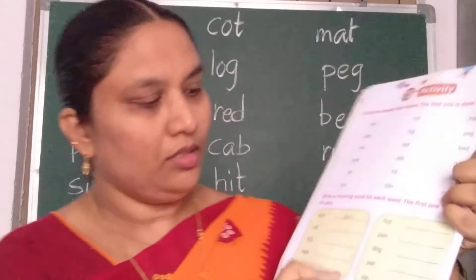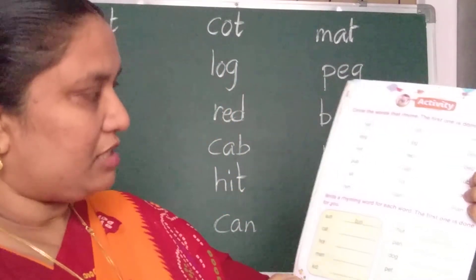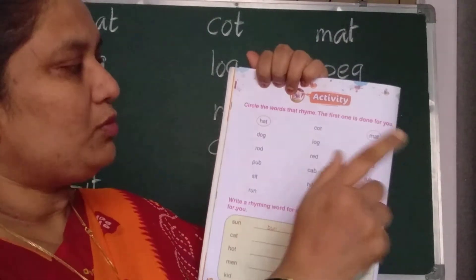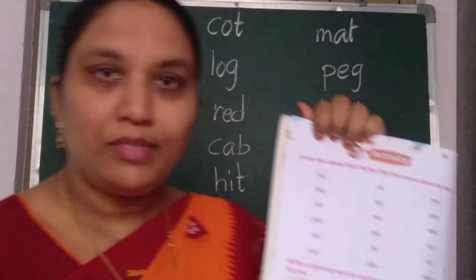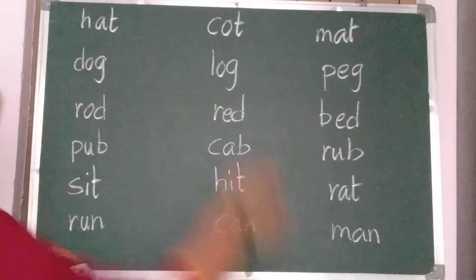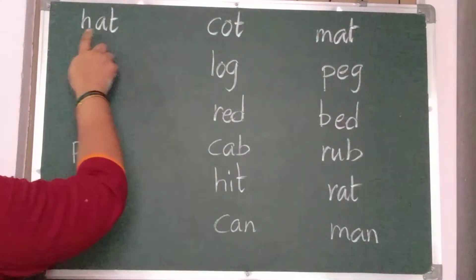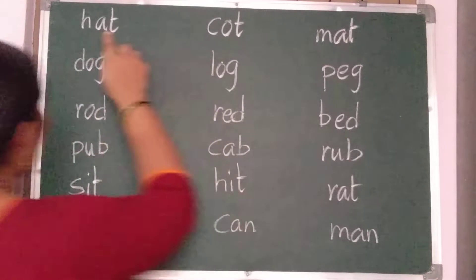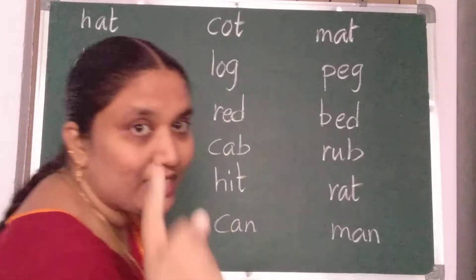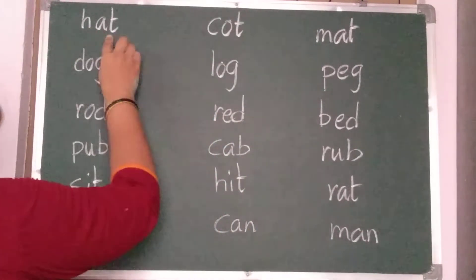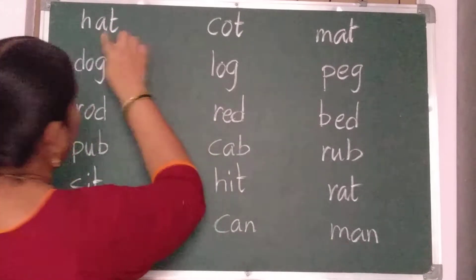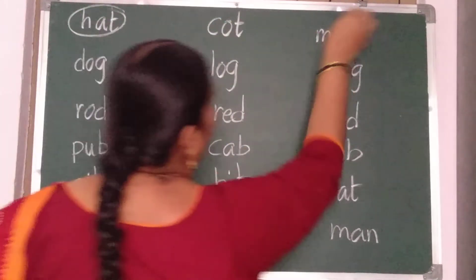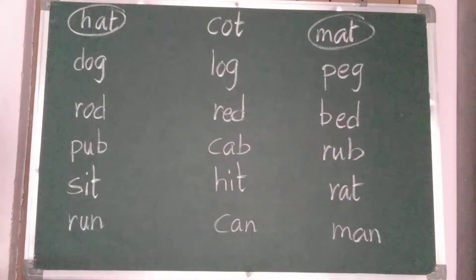Now children, next page — page number 10. Here, what you should do? You should circle the rhyming words — that rhyme. Rhymes means — like H, A, T — hat; and M, A, T — mat. The last two letters are same. Hat, mat — A, T and A, T. So you should circle the same rhyming words.